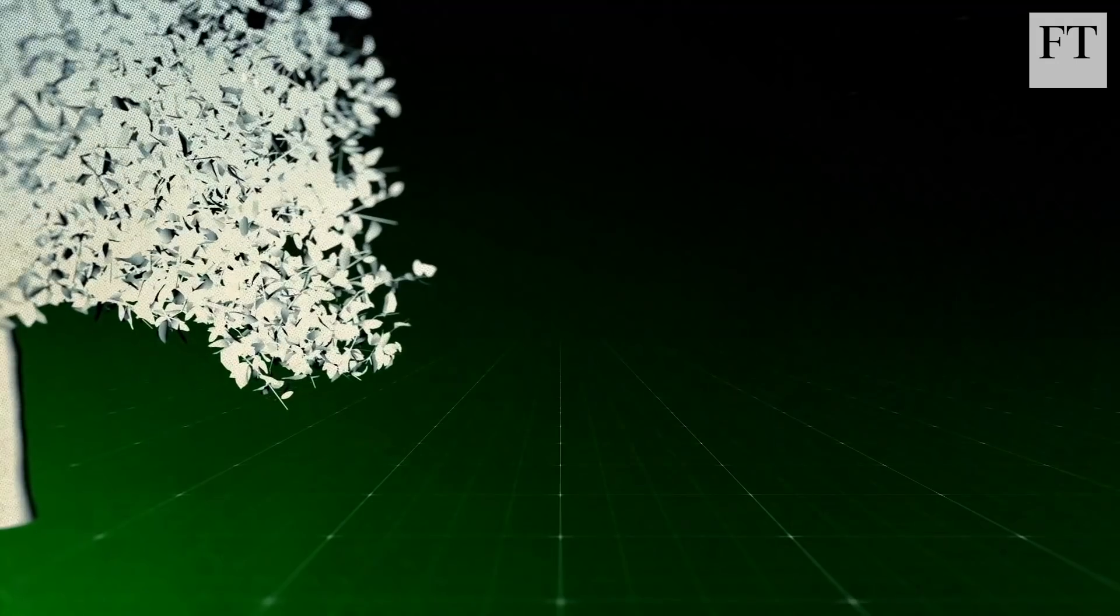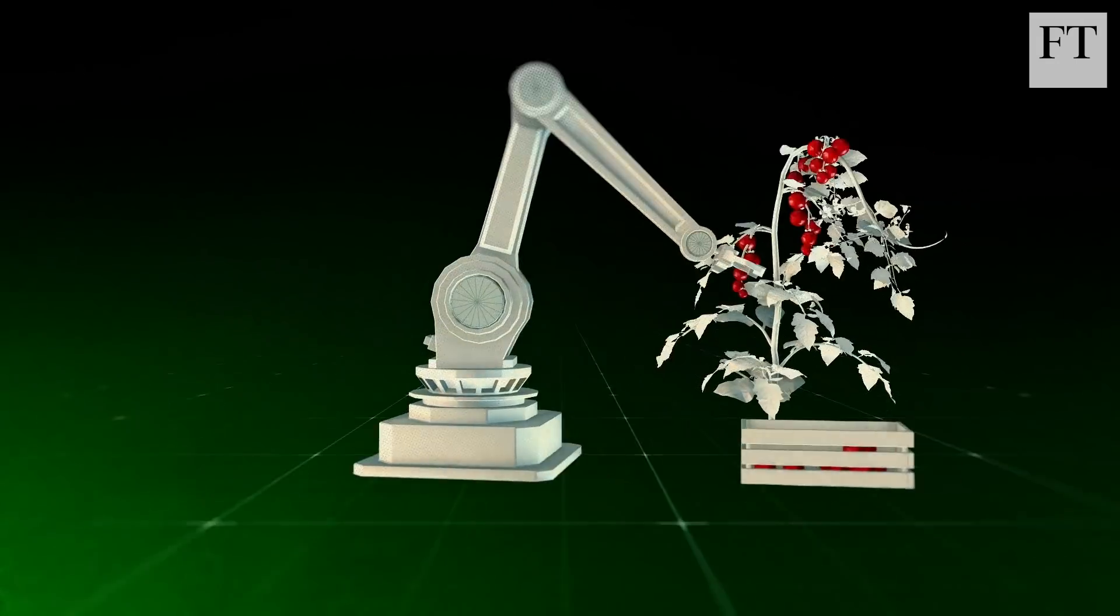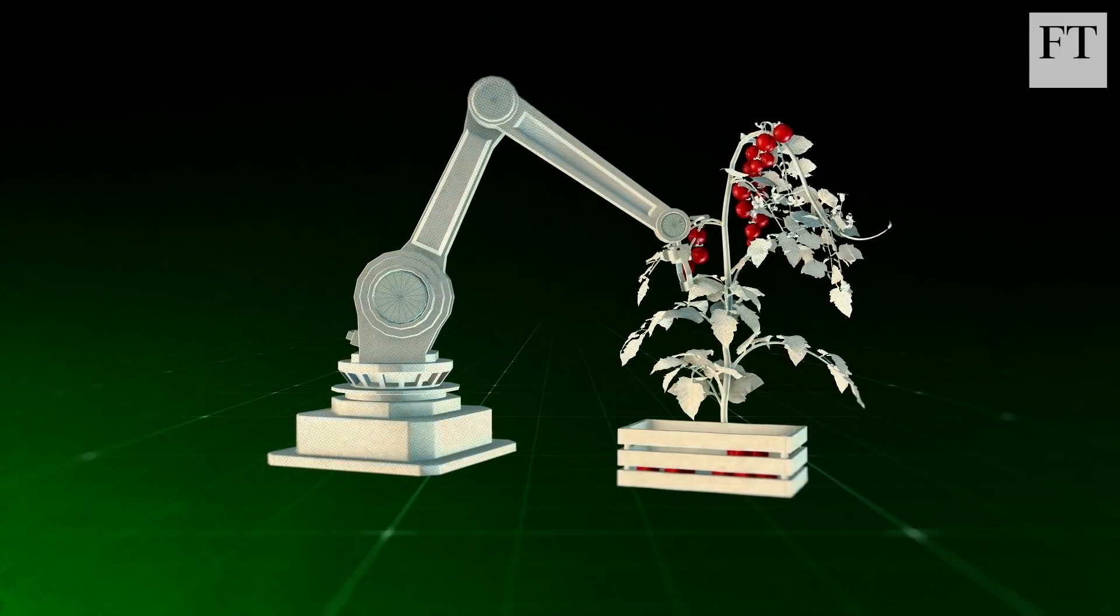Fruits and vegetables do not grow in uniform sizes or ripen at the same rate. Plus, it's hard to make a robot arm with enough dexterity and suppleness to not bruise or cut the fruit.